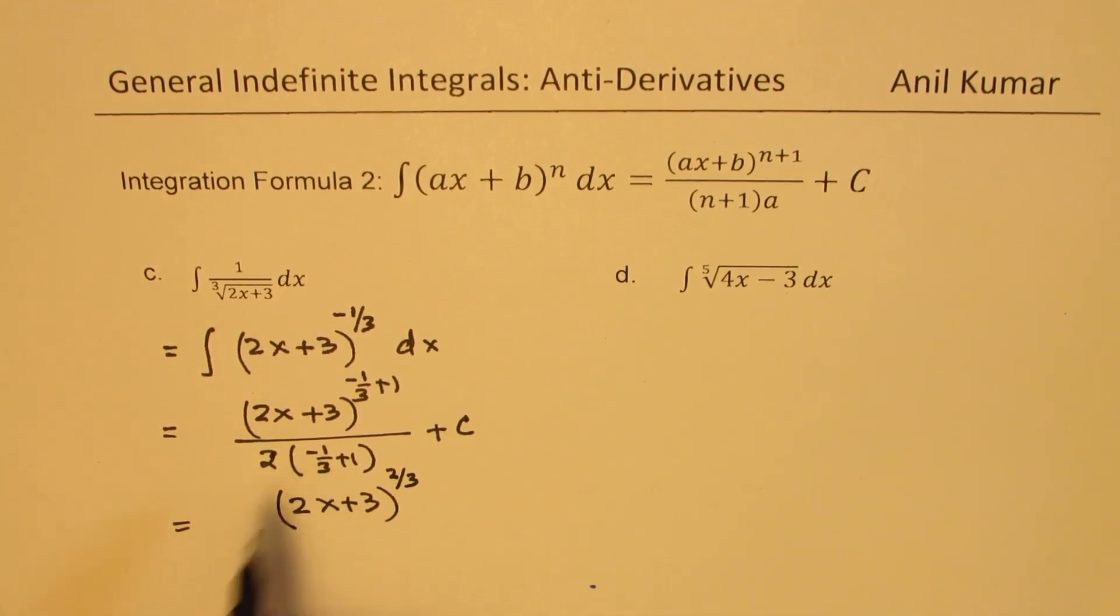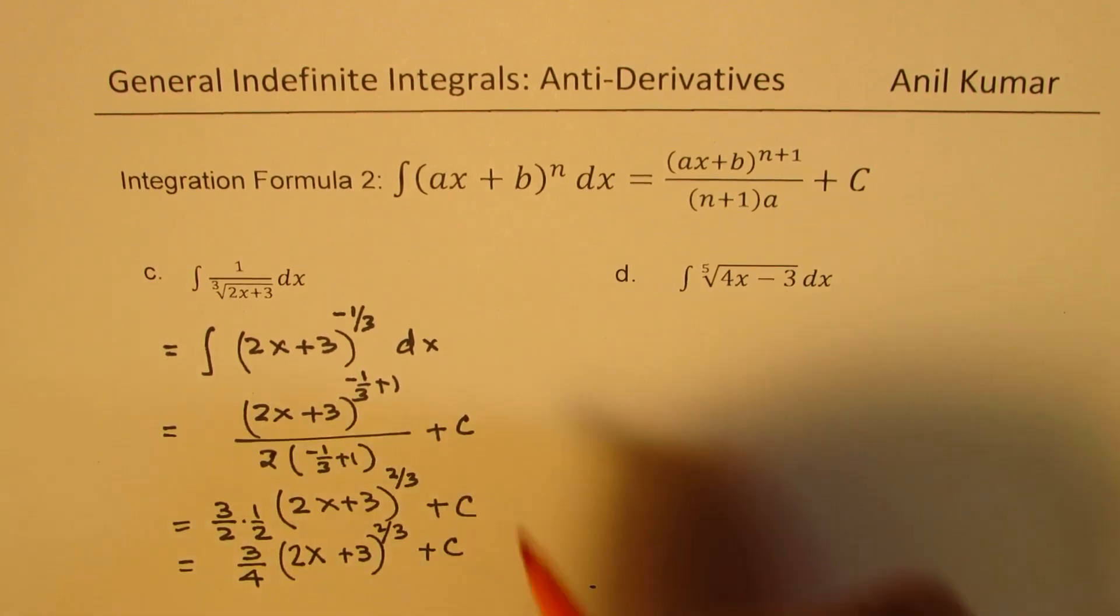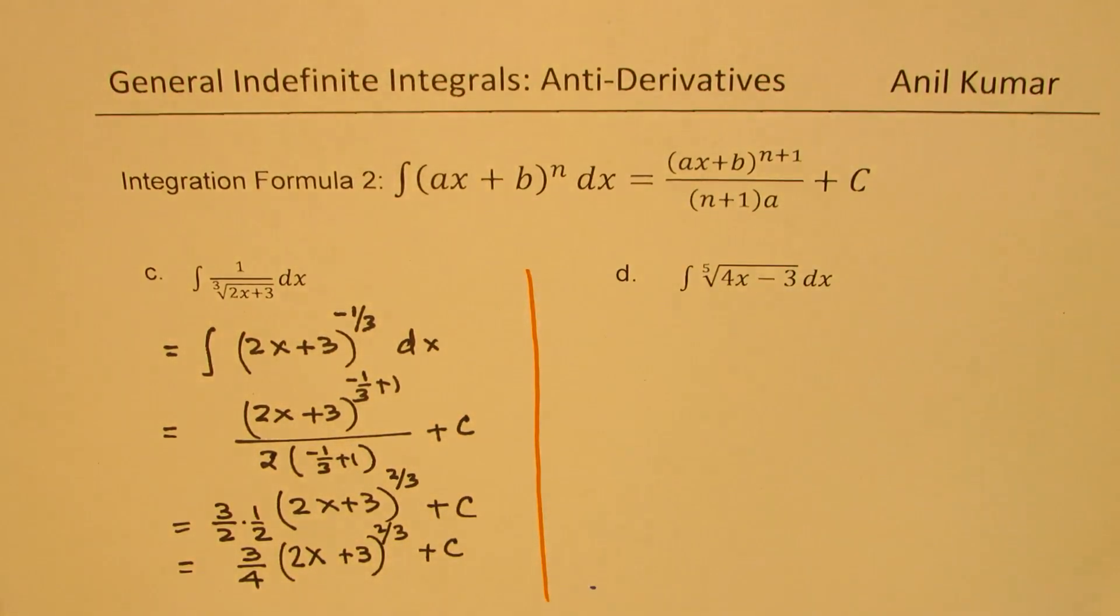This is also 2 over 3, so I'm splitting this and writing as 3 over 2, and we already have half here. Plus C. Now we'll write our final answer, which is 3 over 4 of 2x plus 3 to the power of 2 over 3 plus C. These are the steps which can help you solve this particular question.